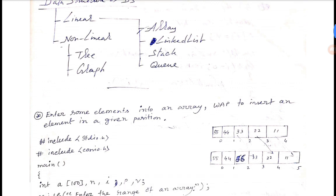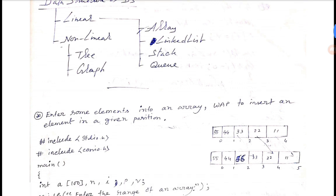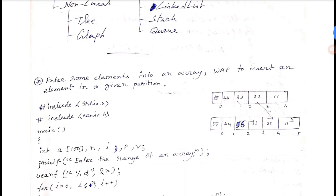We are going to talk about linear data structures. What is linear? Linear includes linked list, stack, and queue. Non-linear includes tree and graph. Let's go to the program.